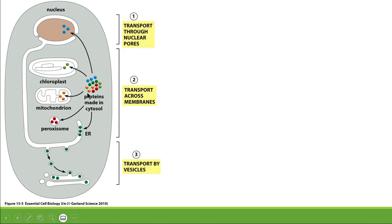As you can see in this picture, proteins are made in the cytosol and from here they are going inside the nucleus, inside the chloroplast, inside the mitochondria, peroxisomes, or the endoplasmic reticulum.